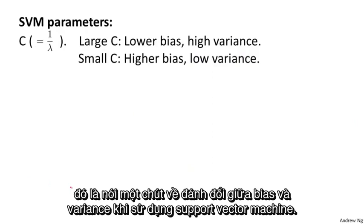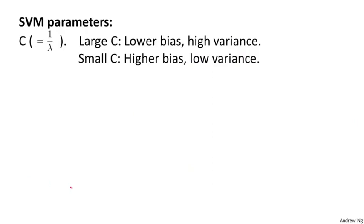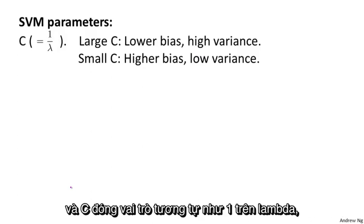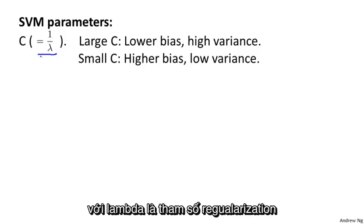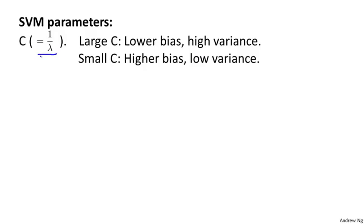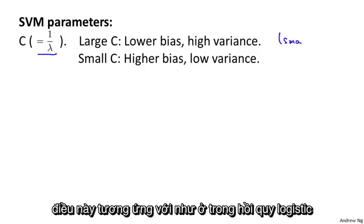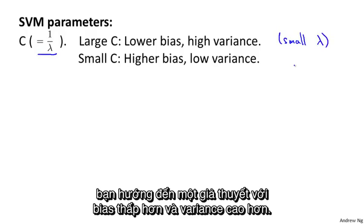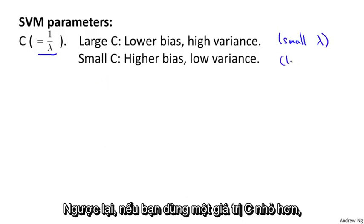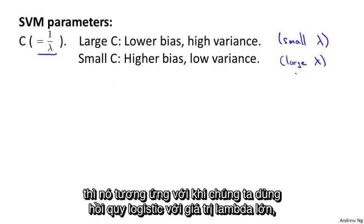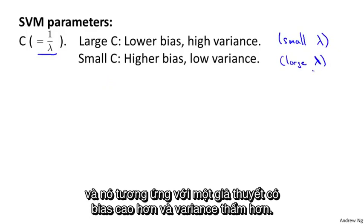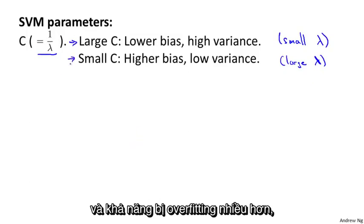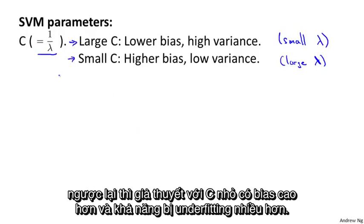The last thing I want to discuss is the bias-variance trade-off when using a support vector machine. One parameter you need to choose is C, which plays a role similar to 1 over lambda, where lambda was the regularization parameter for logistic regression. If you have a large value of C, this corresponds to a small value of lambda — not using much regularization — and you tend to get a hypothesis with lower bias and higher variance. A smaller value of C corresponds to a large lambda, giving a hypothesis with higher bias and lower variance. A hypothesis with large C has higher variance and is more prone to overfitting, whereas small C gives higher bias and is more prone to underfitting.